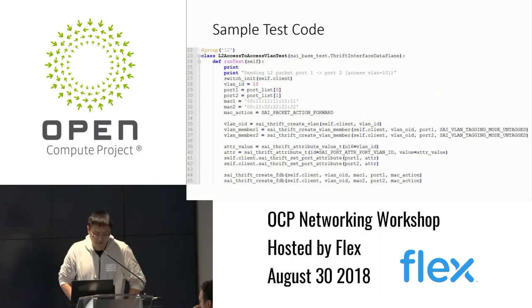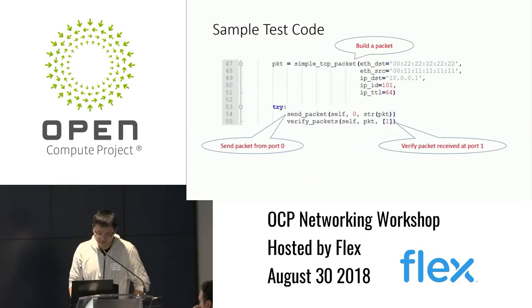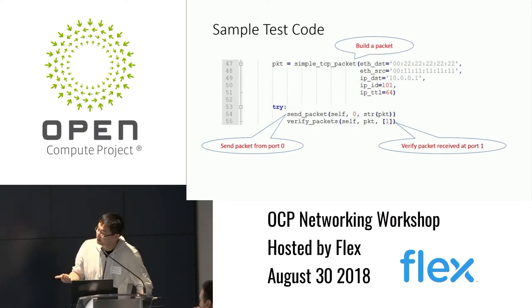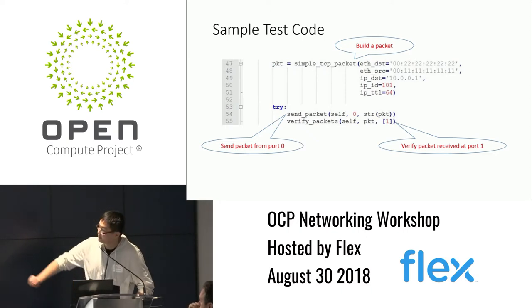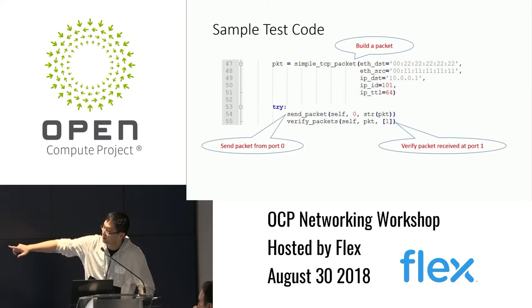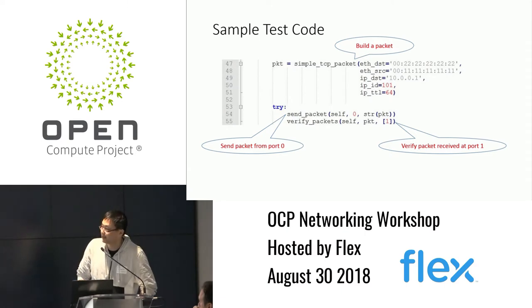That covers the first part — configuration. The second part is for traffic. What it does is build a simple TCP packet where we specify the Ethernet destination MAC, source MAC, destination IP, IP headers, and time-to-live. The last two lines send that exact packet from port 0 and verify the same packet is received on port 1.